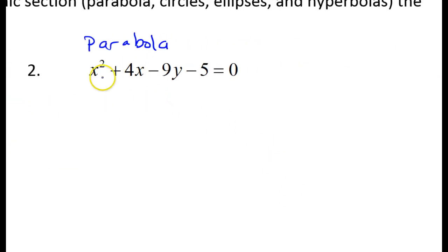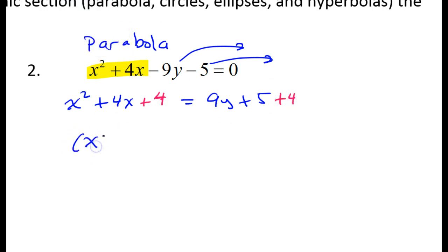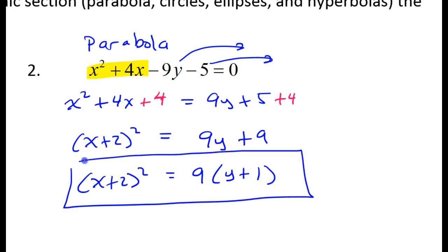Problem number 2: since the x is squared, I'm going to keep the x terms on the left side of the equation. Everything else needs to go to the right side. So I will have x squared plus 4x equals 9y plus 5. Now I complete the square: half of 4 is 2, 2 squared is 4, so I need to add 4 to both sides. If I factor this, I will have x plus 2 squared. Over here I have 9y plus 9, so I factor out the 9 to get 9 times y plus 1. This is the standard form equation of my parabola.